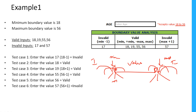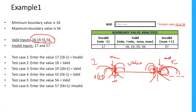The invalid inputs are minimum minus one and maximum plus one. If one scenario fails — say maximum plus one fails — the rest obviously will also fail. Similarly, if minimum minus one, which is 17, fails, then 16, 15, and everything below will also fail. So between 18 to 56, we just take minimum, minimum plus one, maximum minus one, and maximum as our input test data. This is boundary value analysis.